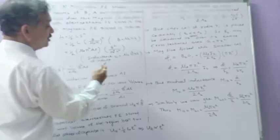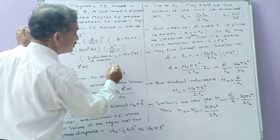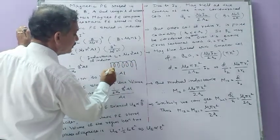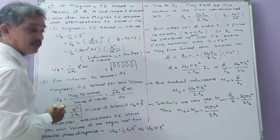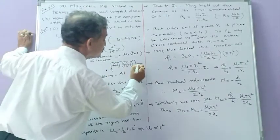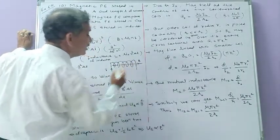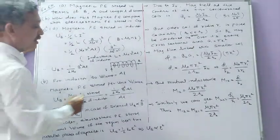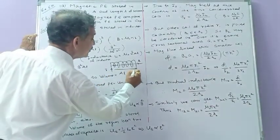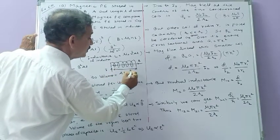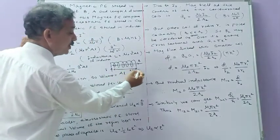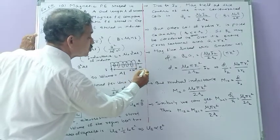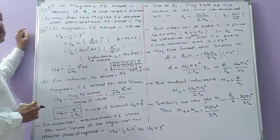The solenoid has area A and carries electric current I flowing through it. Along the direction of its axis, magnetic field B is produced, where B equals mu0 times small n times I. The length is L, and the number of turns is capital N, so capital N upon L equals small n, which is the number of turns per unit length.